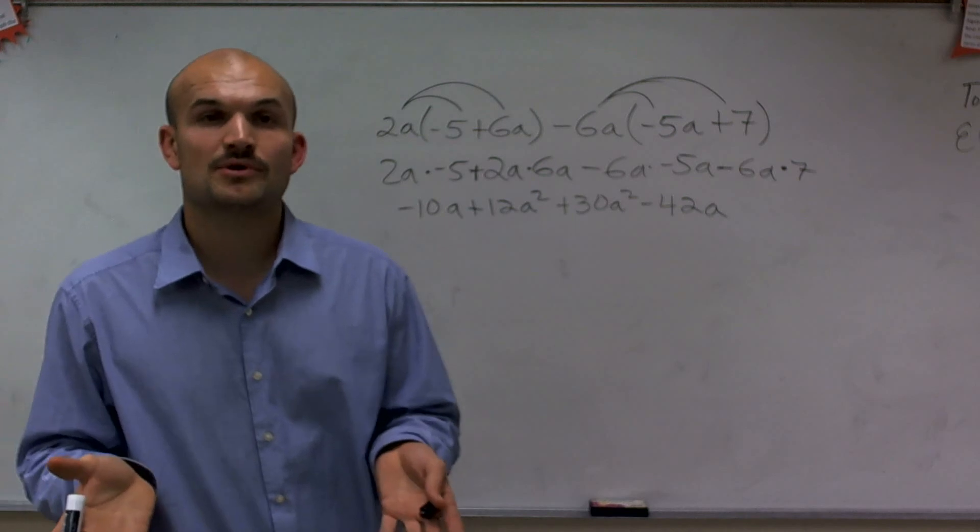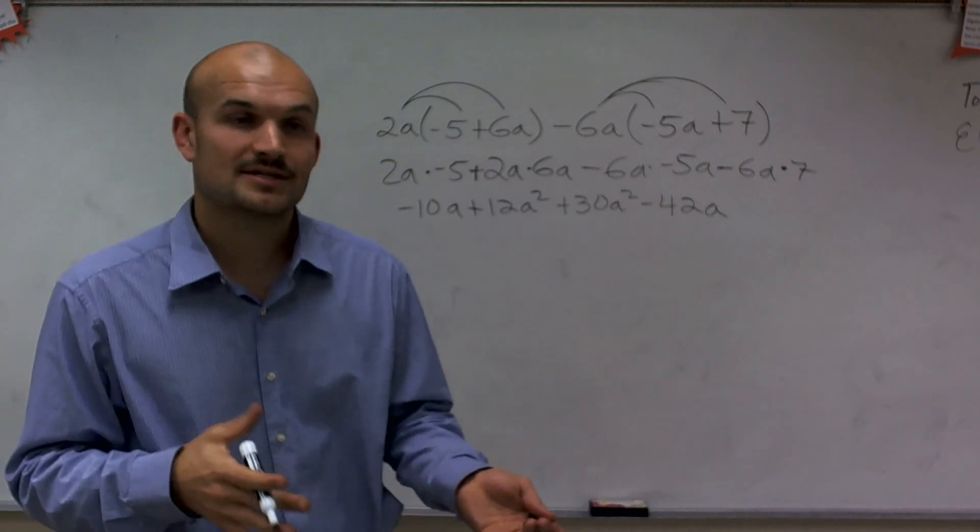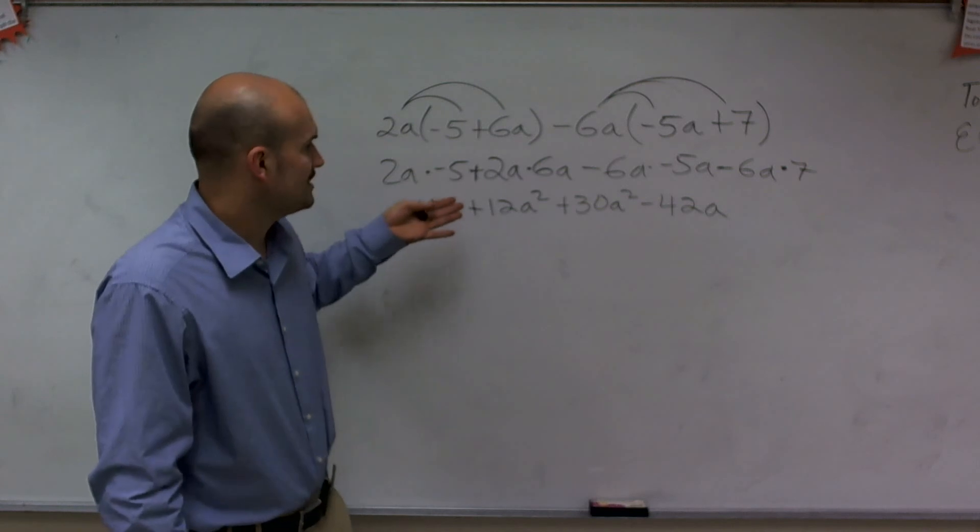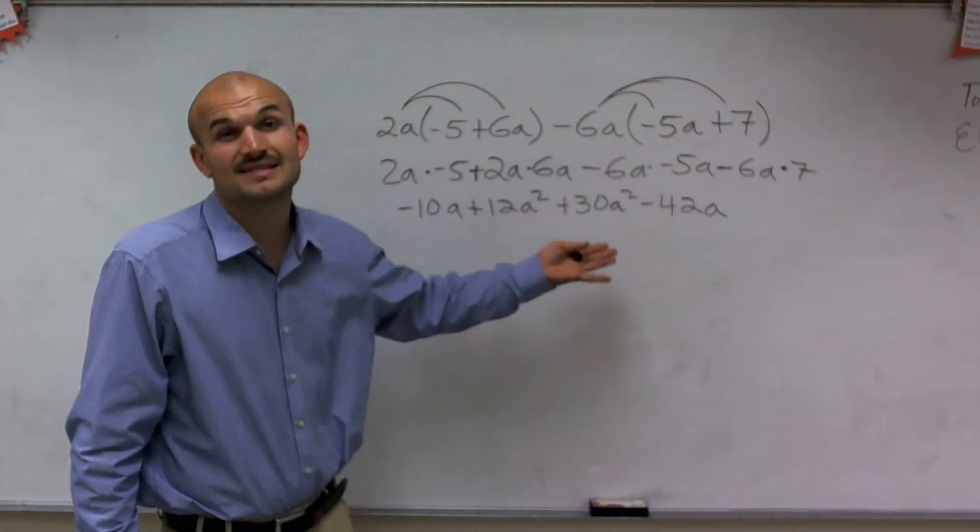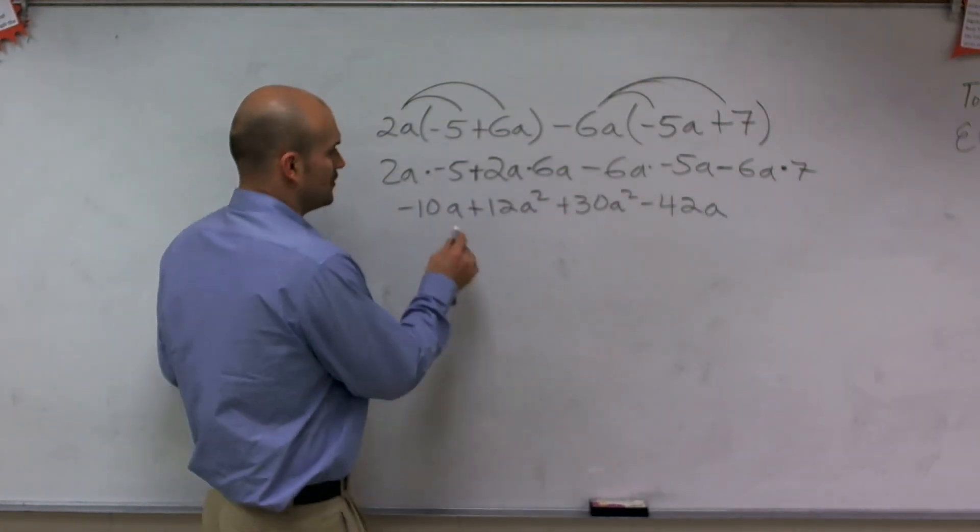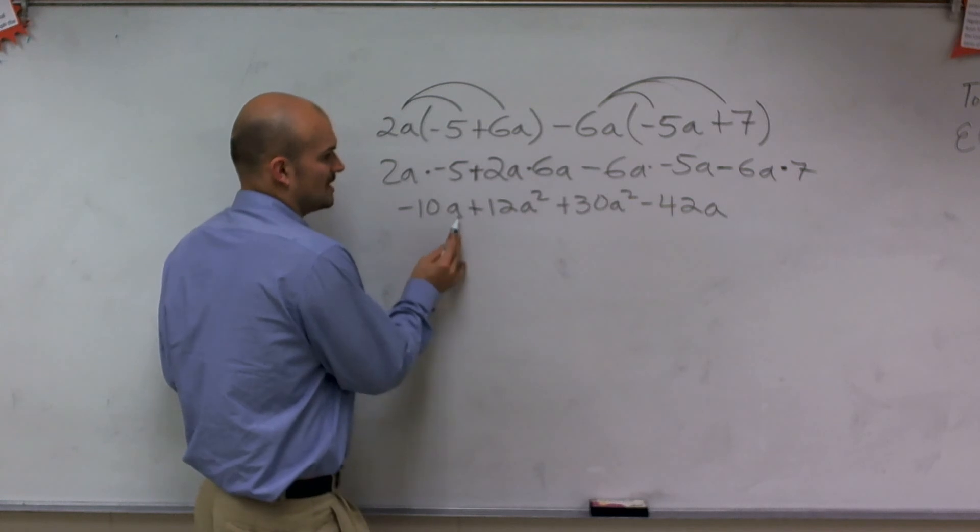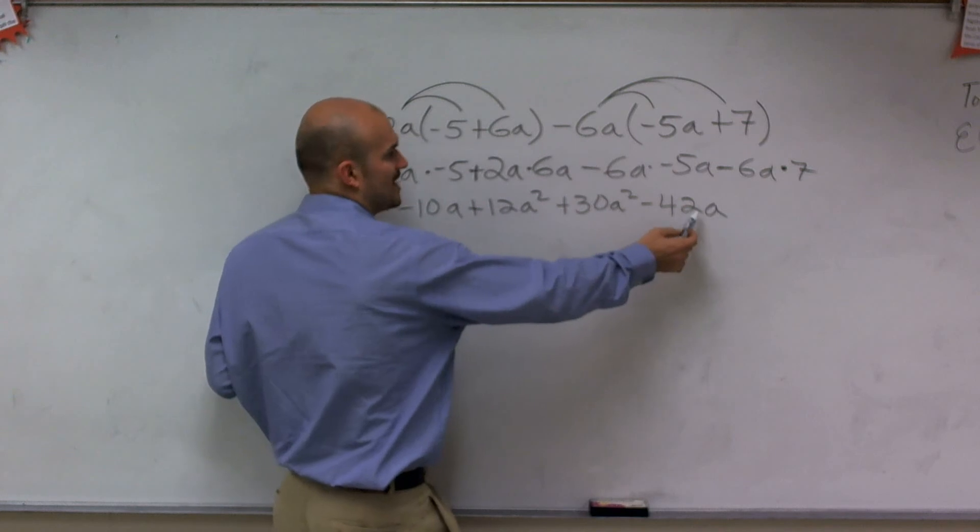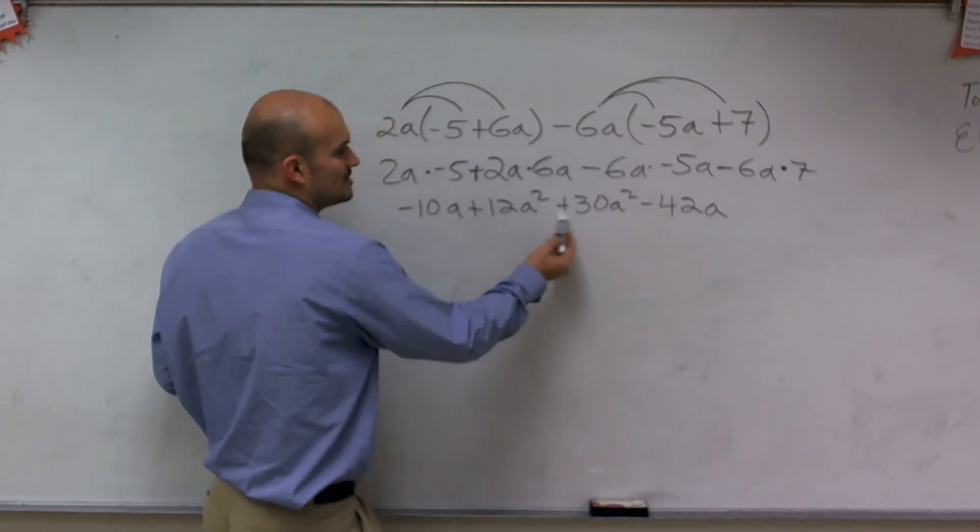Now, the next thing we need to do is apply combining by like terms. Remember, like terms are going to be terms that have exactly the same factors. So these factors have numbers and a, so I could combine this only with factors with numbers and a.